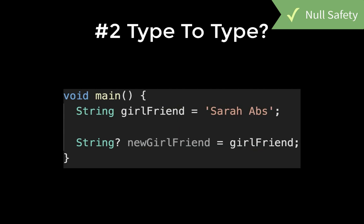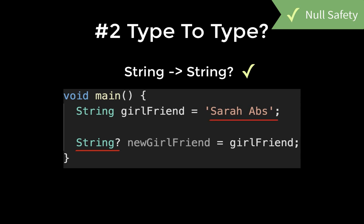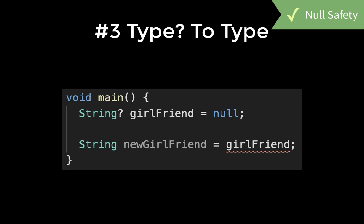Next, we look at how we can convert between the type and the type question mark. If you convert from the type to the type question mark, there is no problem since the nullable type accepts real values and also a null value. But converting a nullable type to a non-nullable type is more problematic, and the compiler warns us accordingly.